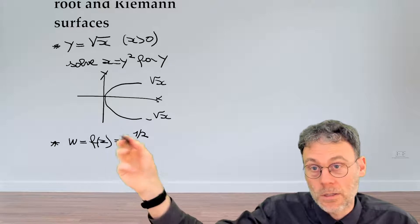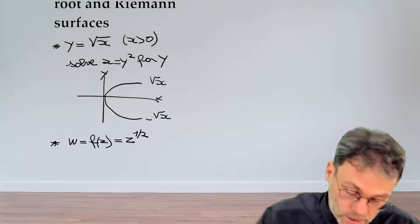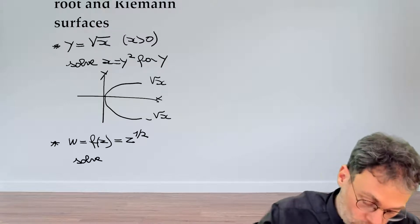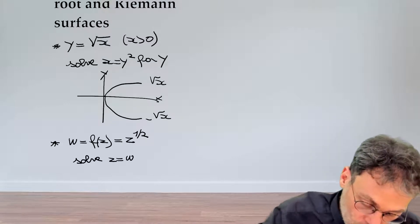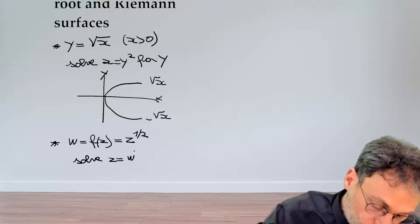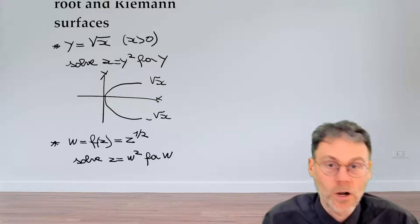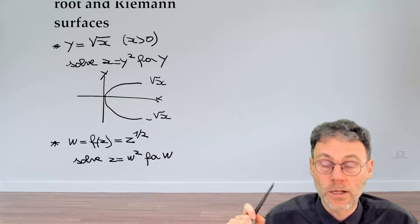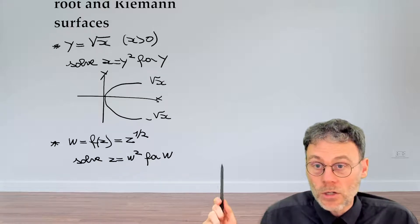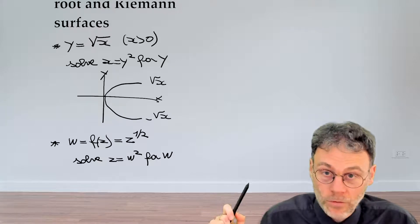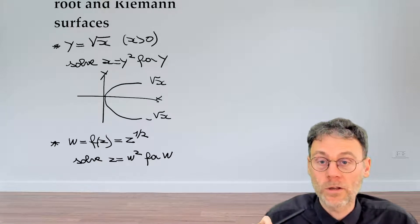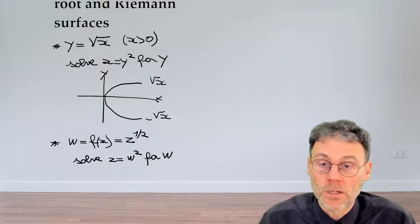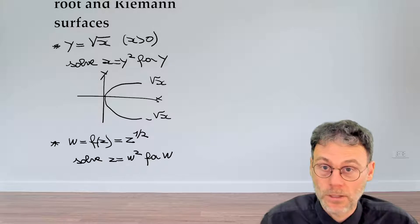But again, just like before, this square root is what you get when you solve a certain equation. When you solve the equation z equals w squared for w. So you're trying to figure out what are the w values that solve that equation. The question is, in this particular case, do you also have two solutions? So pause the video and try to explicitly calculate the solutions to that equation, but now this time in the complex domain.